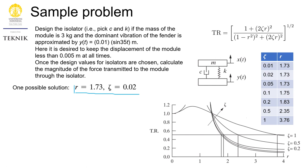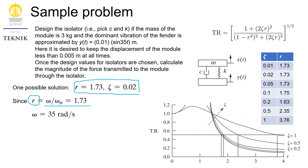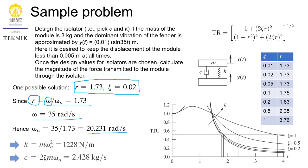Having evaluated many possible solutions, we pick one combination of R and zeta. With R known, and omega known from the problem, omega_n can be calculated to be 20.231 radians per second. From omega_n we can find k. From the corresponding zeta value, we can find c.